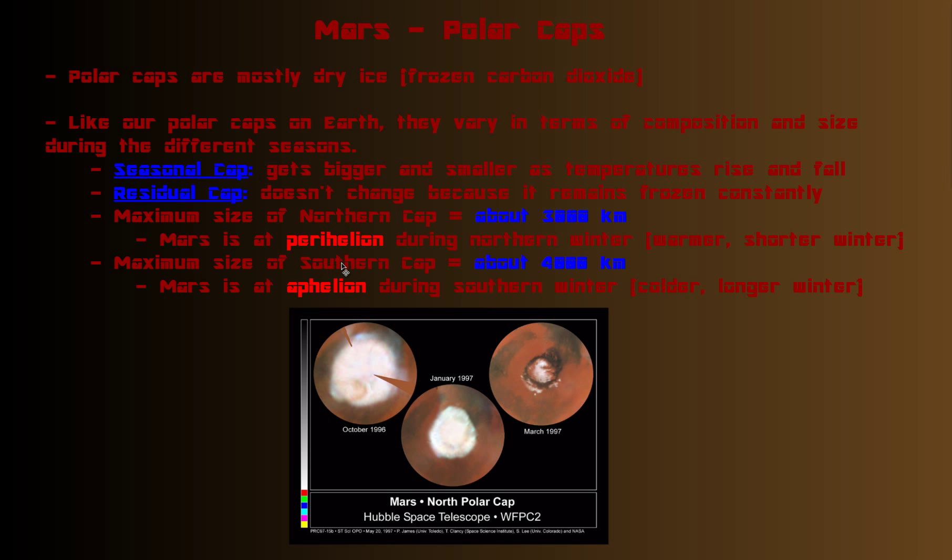The southern polar cap, during the southern winter, reaches about 4,000 kilometers. It's a bit bigger than the northern cap. That's because Mars is at aphelion, and so it's farther from the sun, and makes for a colder, longer winter. So the cap can get bigger.